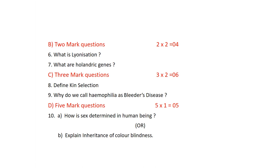When a color blind mother marries a normal-visioned man, all F1 daughters are carriers but normal, and all F1 sons are color blind since each son receives one recessive gene from the mother. When the carrier daughter marries a color blind man, in the F2 generation, color blind females and color blind males are produced in equal numbers.